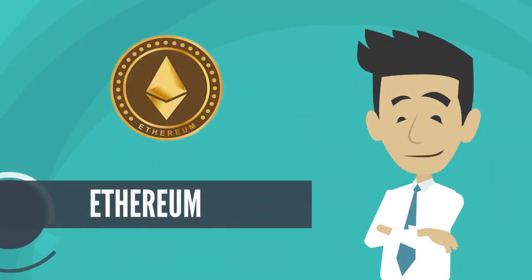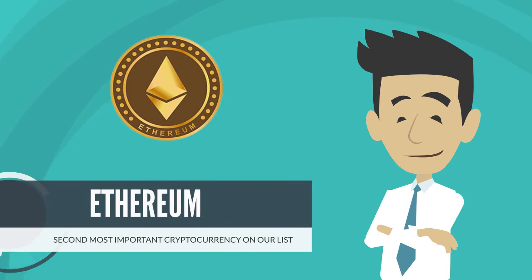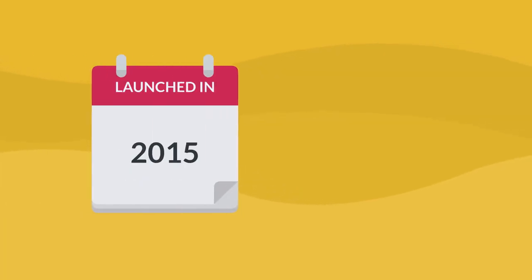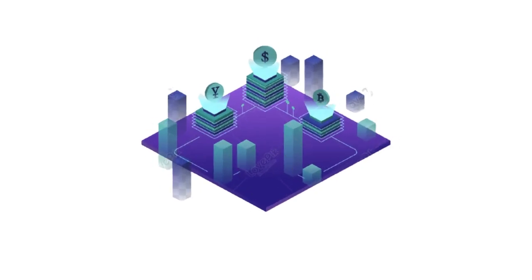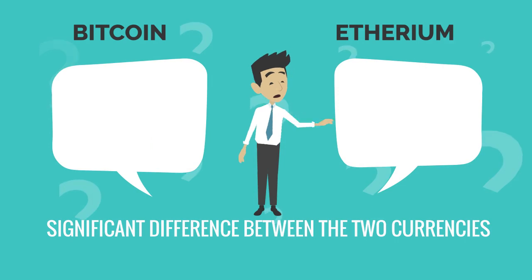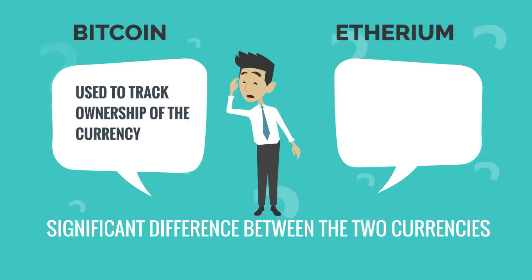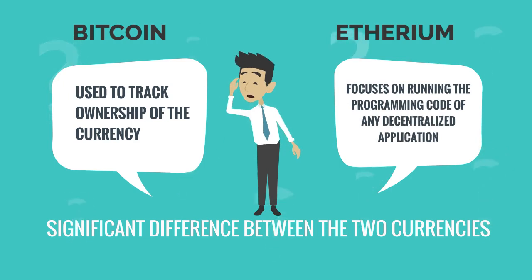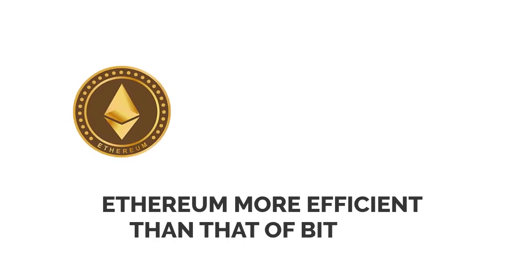The second most important cryptocurrency on our list is Ethereum. Ethereum was launched in 2015 and is similar in that Ethereum also works using a blockchain network. The significant difference between the two currencies is that while Bitcoin is used to track ownership of the currency, Ethereum focuses on running the programming code of any decentralized application. This makes the layout of Ethereum more efficient than that of Bitcoin.